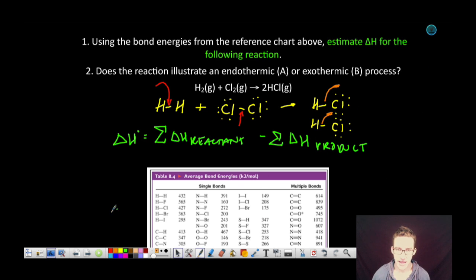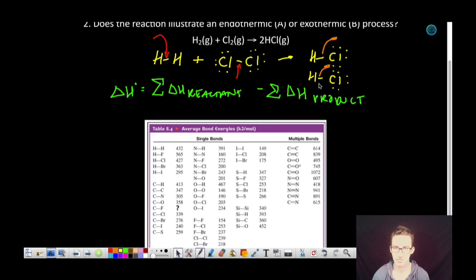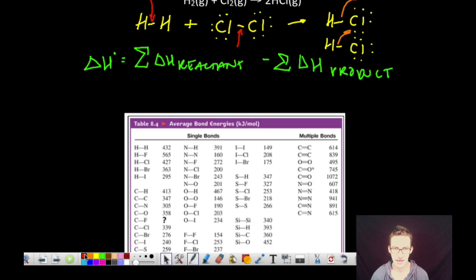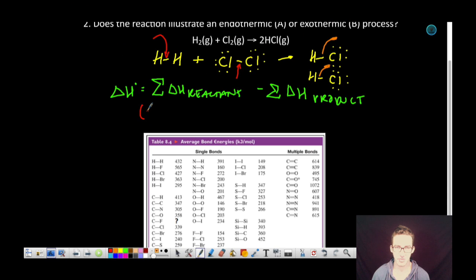And if we take a quick peek, it's simply a matter of looking at this bond energy chart, plugging it into the formula. The energy required to break that one H-H bond or one mole of hydrogen bonds is going to be 432 kilojoules of energy. We're going to add to that the energy required to break one mole of those chlorine-chlorine single bonds, which is equal to 239 kilojoules.